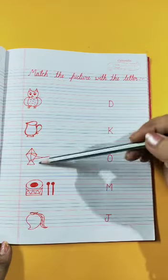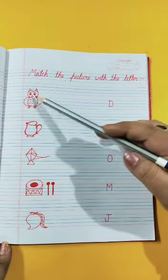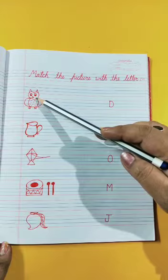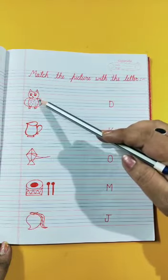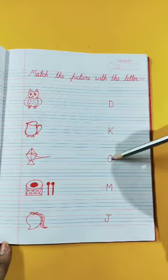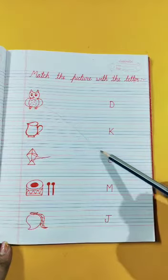You have to match this picture with the letters. Like, this is Owl. Owl starts with the letter O. So we will match like this.